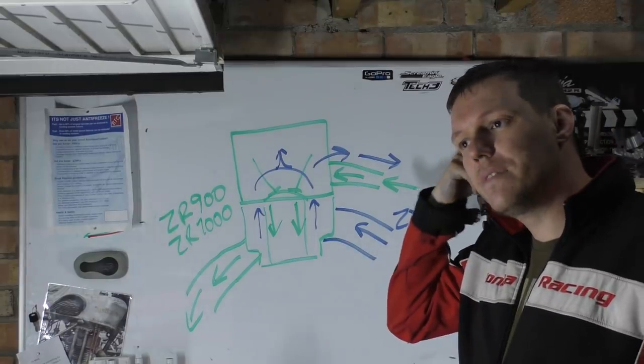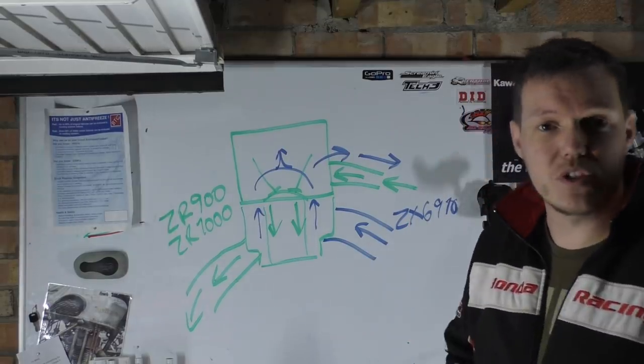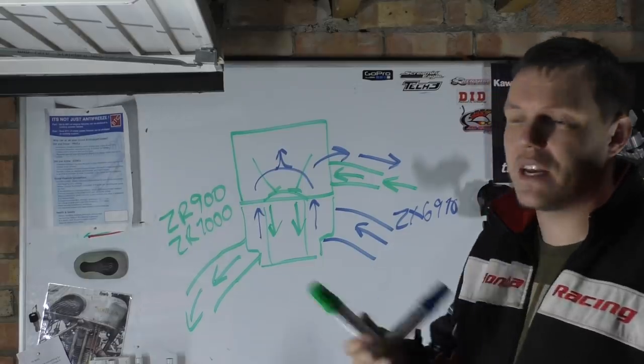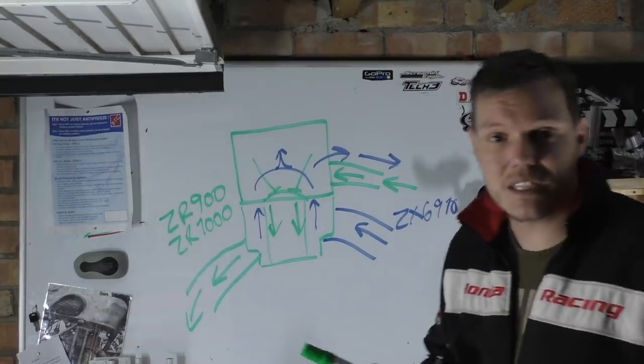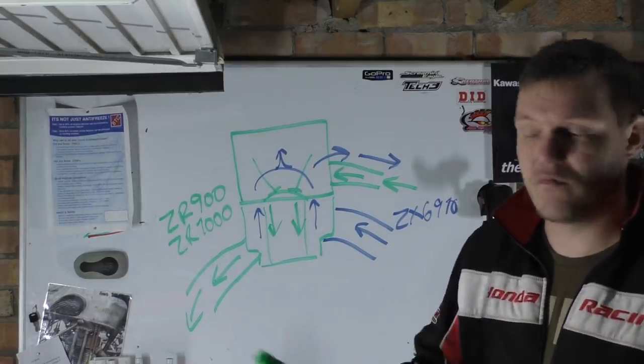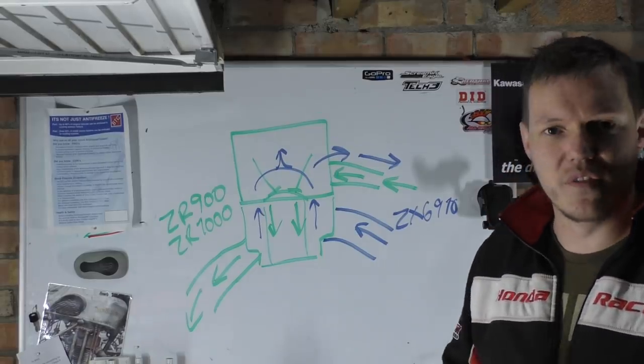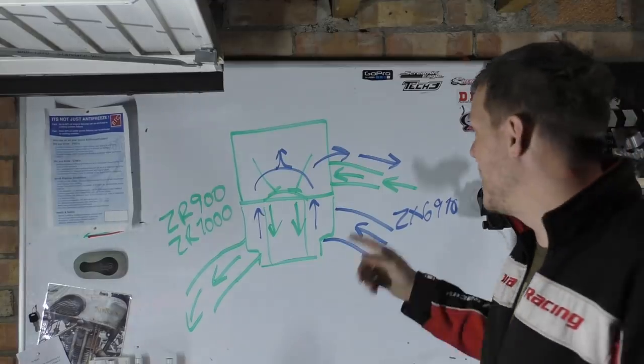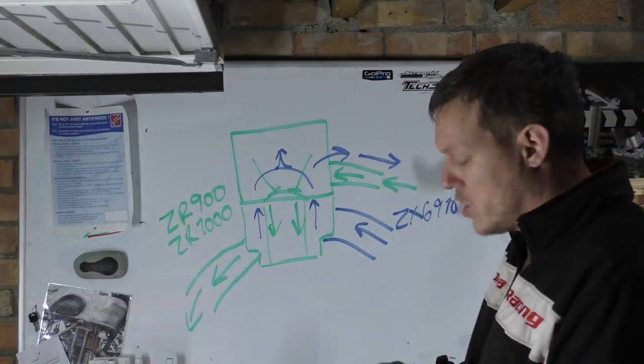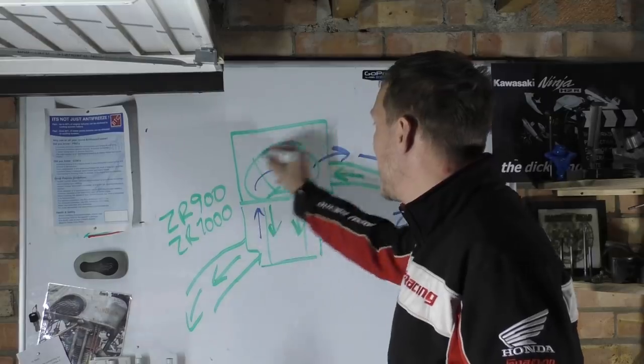I was talking to Andy last week and he was saying his missus has got a ZX6 and that thing going around London tends to get really hot, on the verge of overheating. That got me thinking, maybe that's the reason why, because the hot spot in this system is in the head.